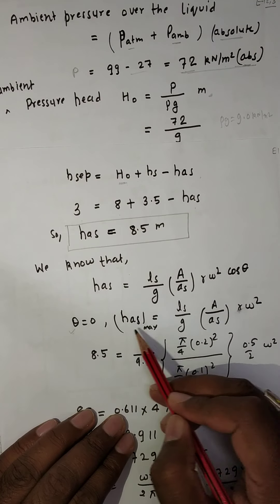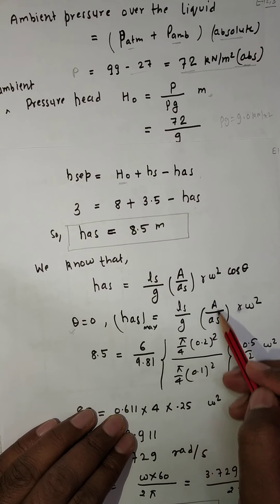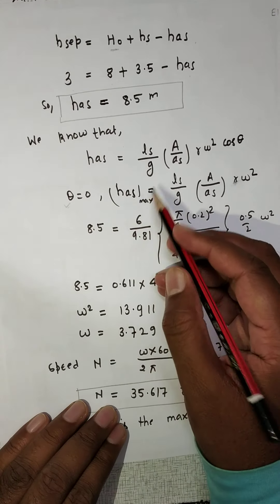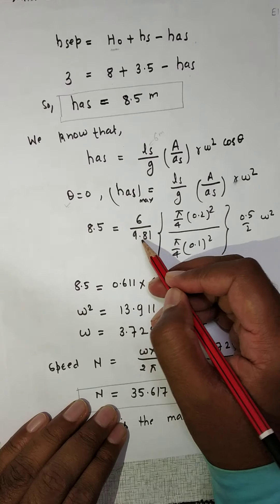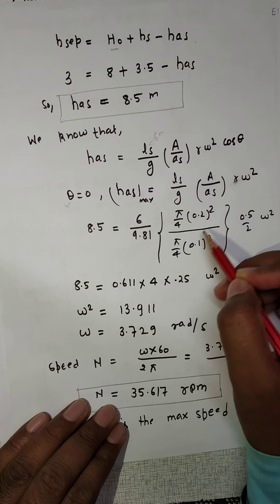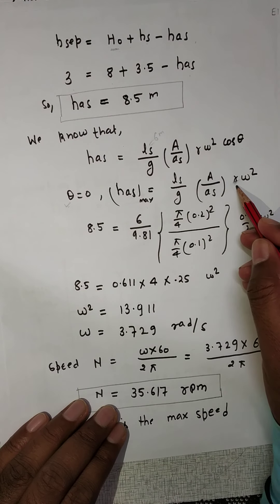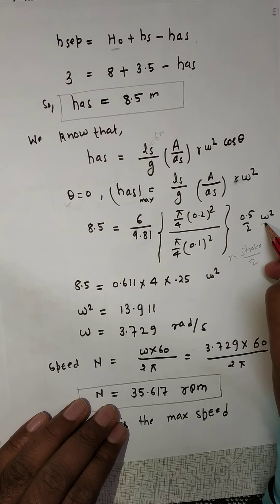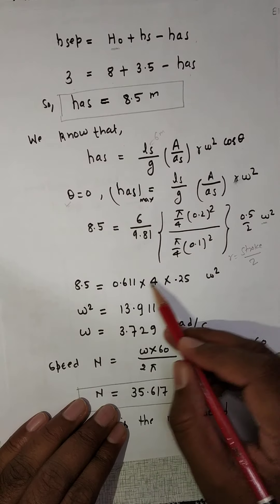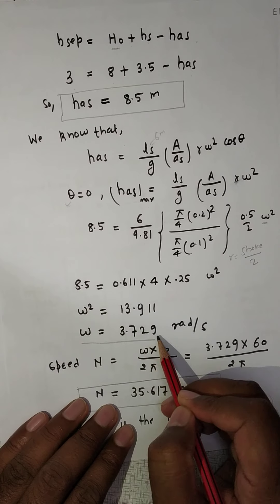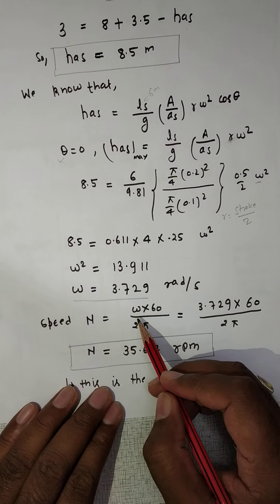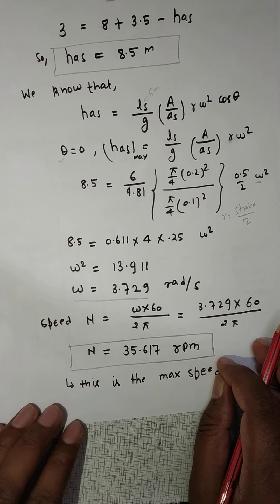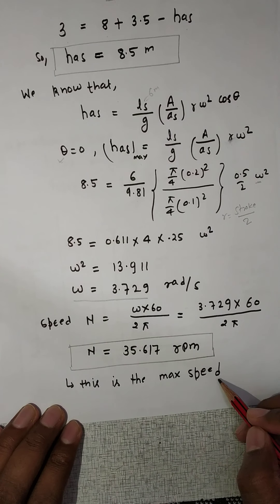For maximum value, θ = 0, so h_s_max = (l_s / g) × (A / A_s) × r × ω². Substituting values: 8.5 = (6 / 9.81) × (A / A_s) × r × ω². The radius r = stroke length / 2 = 0.5 / 2 = 0.25 meters. After calculating with the given cylinder diameter 0.2 m and suction pipe diameter 0.1 m, the value comes out as ω = 3.729 radians per second. Converting to RPM: speed = ω × 60 / (2π) = 35.617 RPM. This is the maximum admissible speed.